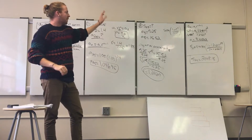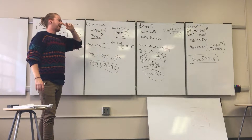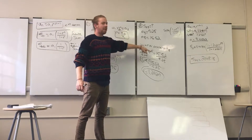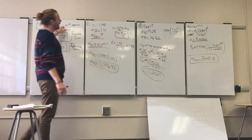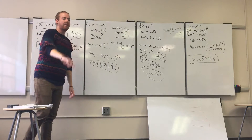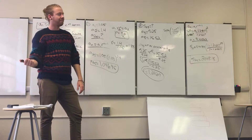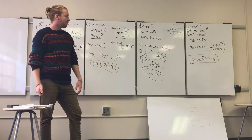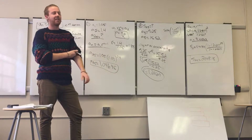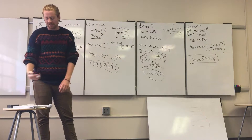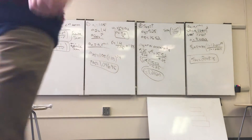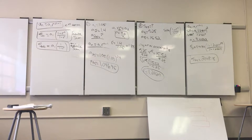That problem was pretty intensive. They gave you the 3rd and 8th terms, you had to use that to find r, then use the nth term equation to find A_sub_1, and then plug into the finite sum equation. Feel free to pause the video and go back to make sure you understand what was going on.